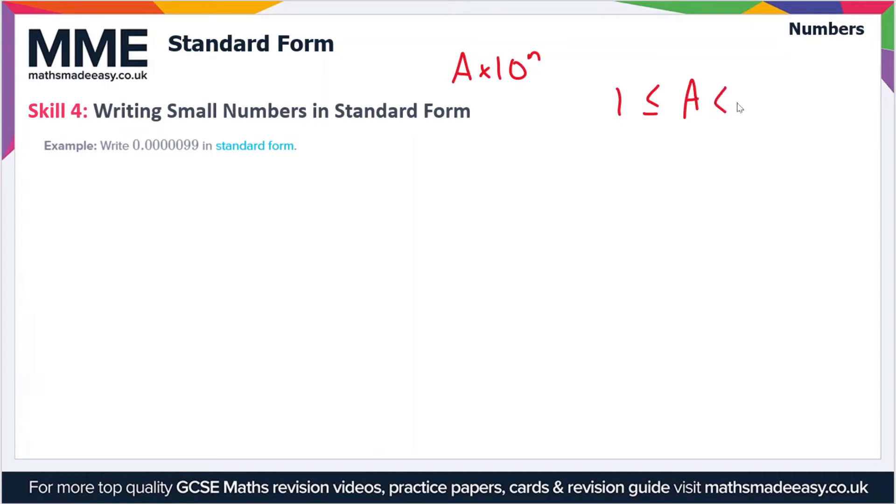Here we've got 0.000099. We want to write this in standard form, so let's rewrite it out: 0.000099.